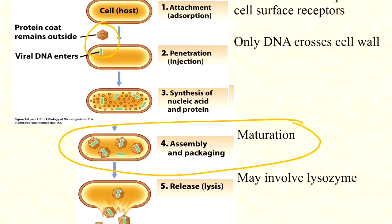Then ultimately there's release. The burst size — the number of new virions released — is easily between two to three hundred in many cases. Two to three hundred new variants are released as the cell is busted open, and the cell dies from this process. You can see why phage are considered obligate intracellular parasites: they have to get inside to replicate and they harm the cell as they consume all its resources. This is the lytic cycle.